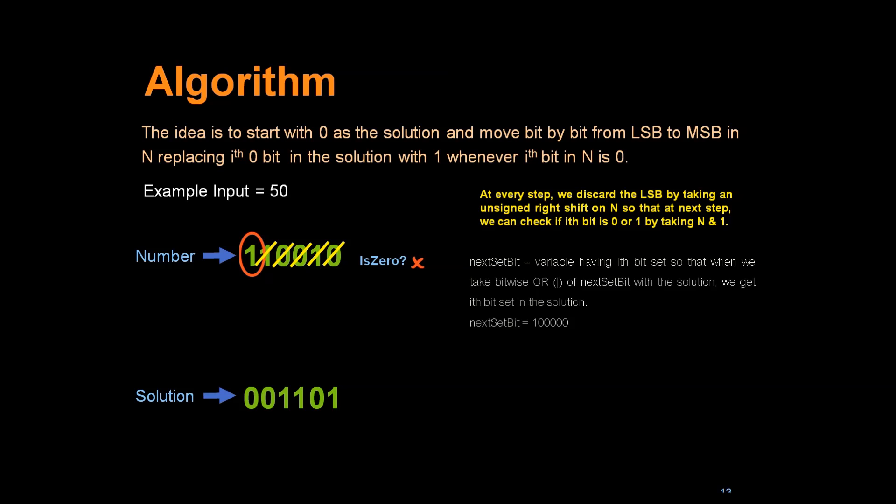We come to the MSB bit. Is this 0? This is not 0, so keep 0 as it is. All the bits in our input number have been exhausted, so we are done. We reached our final solution which is 001101.